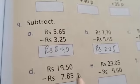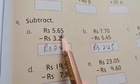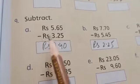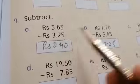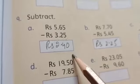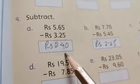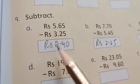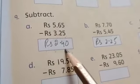Now we will do some subtraction. Rupees 5.65 minus Rupees 3.25. 5 minus 5 is 0, 6 minus 2 is 4, 5 minus 3 is 2. Rupees 2.40.